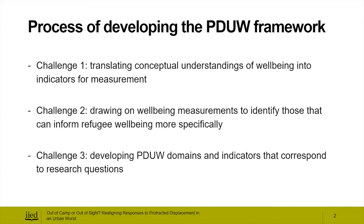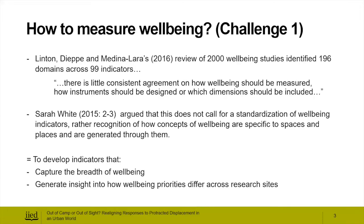To begin with the first challenge, which is translating conceptual understandings of wellbeing into indicators: in the existing literature, Leon Diete and Medina Lara conducted a broad study that reviewed 2,000 wellbeing studies, and this led them to identify 196 domains and within them 99 indicators. They concluded that there is little consistent agreement in the existing literature on how wellbeing should be measured, how instruments should be designed, and which dimensions should be included.